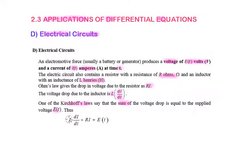Thus, L, the inductance, times the rate of change of electric current, dI/dt, plus RI equals E(t).